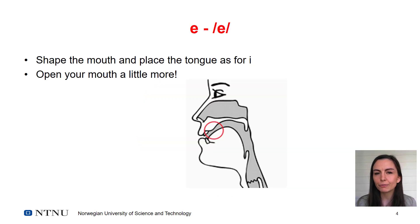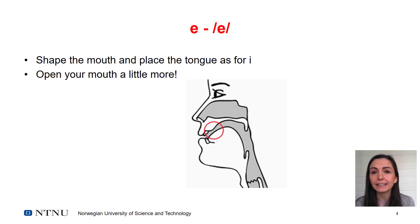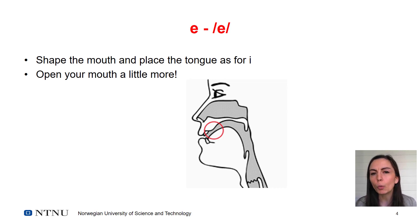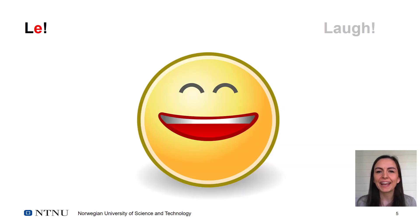Now for e, you shape the mouth as you did for i, and you just simply open your mouth a little bit more. e, le, he he.